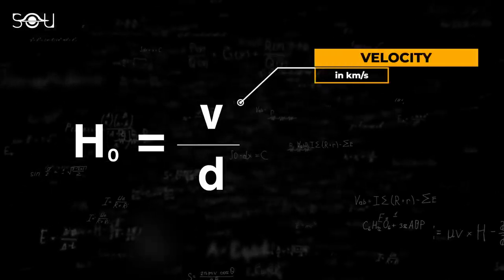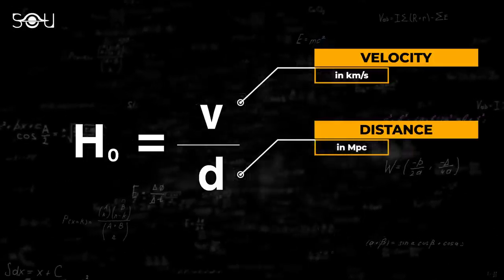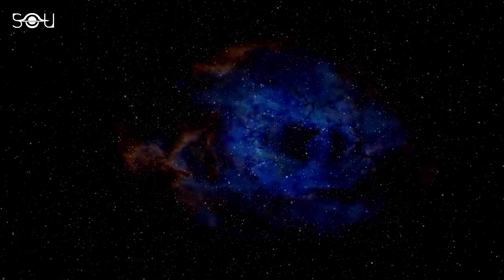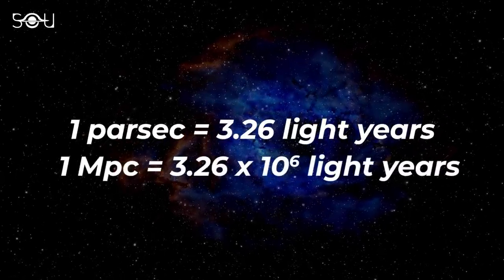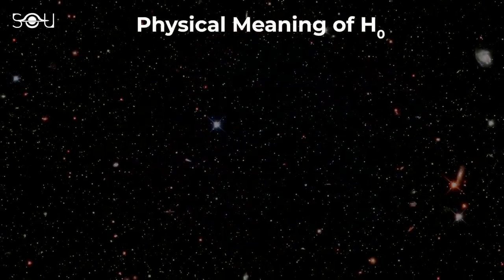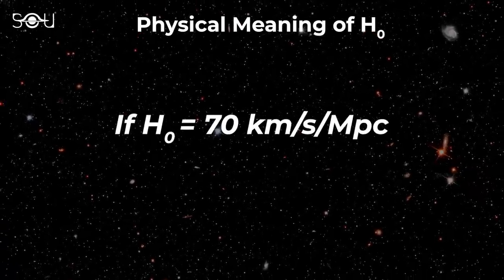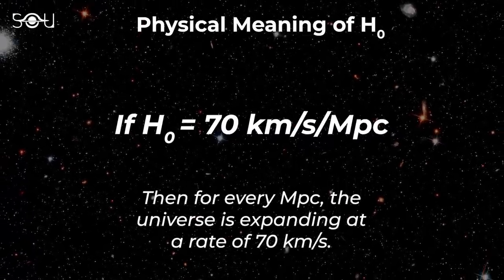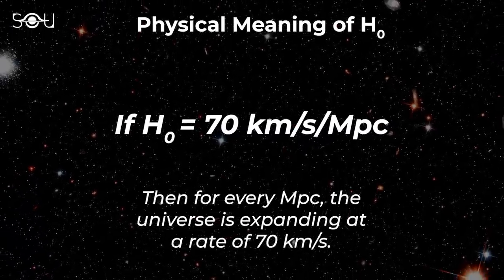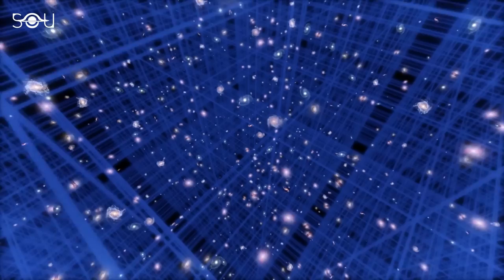Conventionally, the velocity of a galaxy in deep space is measured in kilometers per second, and the distance in megaparsecs. A parsec is a unit of length equal to 3.26 light years, and a megaparsec is a million times that distance. So if the value of the Hubble constant is 70 kilometers per second per megaparsec, this means that for every megaparsec of distance, the universe is expanding at a rate of 70 kilometers per second. Isn't it mind-boggling to consider such a fast rate?